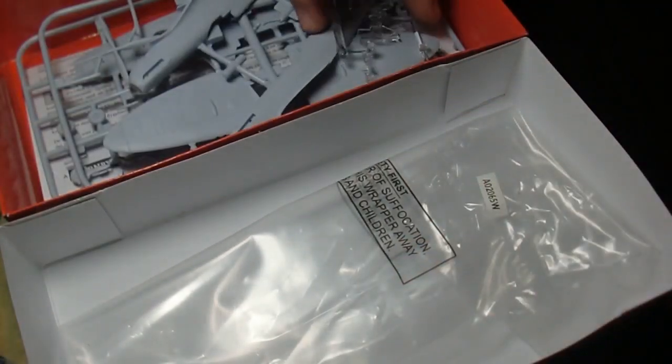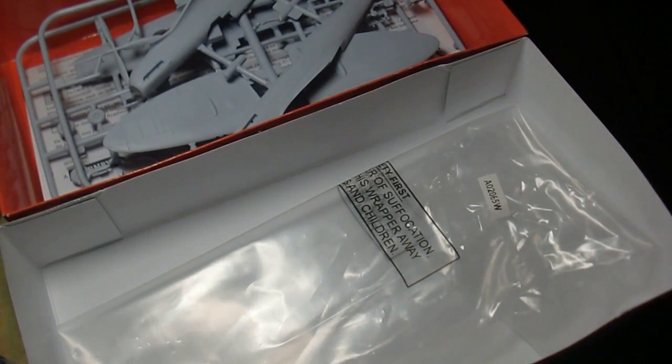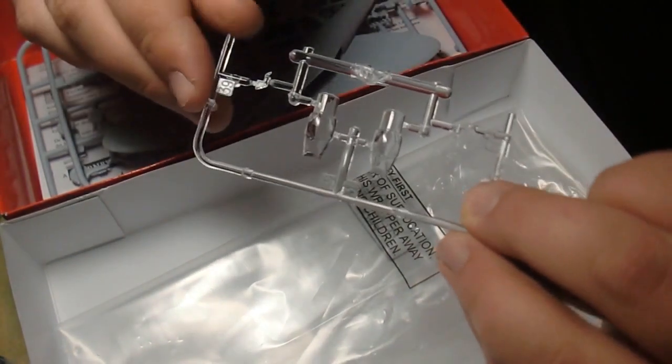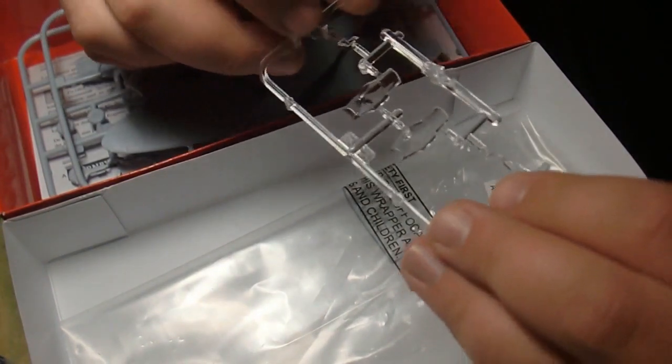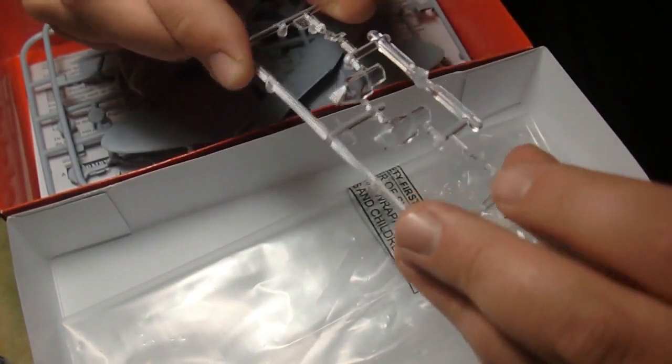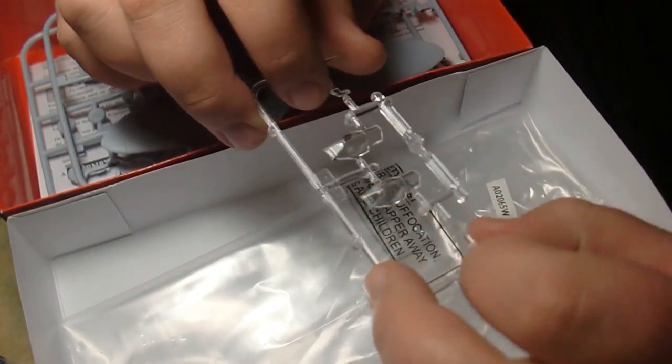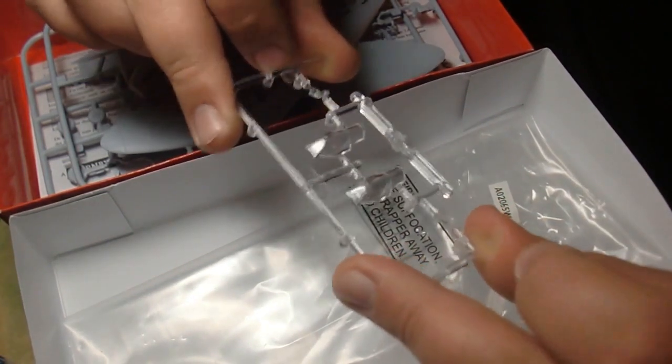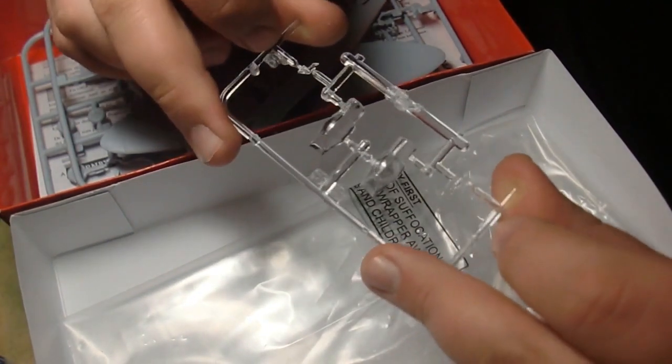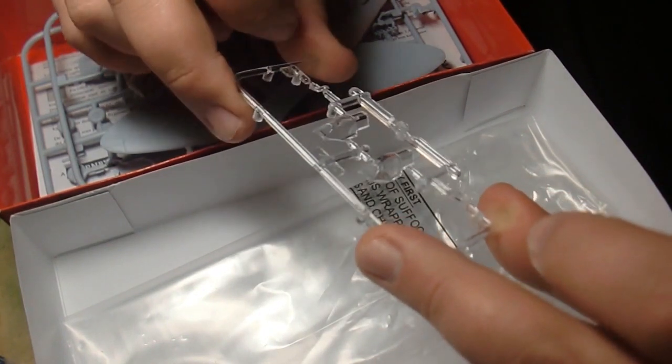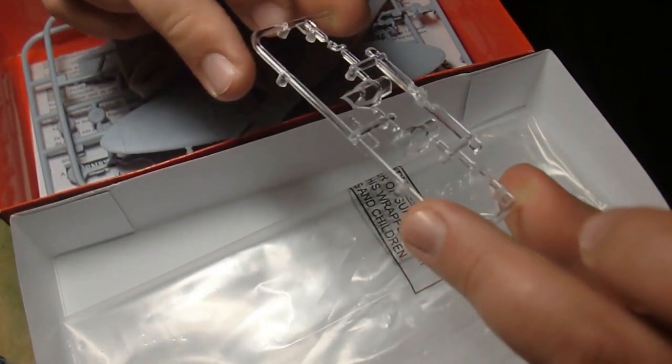Now, since I bought this kit years ago, they have changed some things on it. And, this was the most surprising thing in the kit. This was really cool. You get this double canopy here. And, they're identical. Everything on here is identical. You get two gun sights, you get two canopies. It's like Airfix knew I was going to be building this as a twin seater. So, thank you, Airfix. That's really awesome.